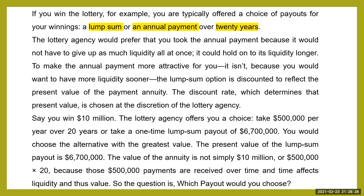Say you win 10 million dollars. The lottery agency offers you a choice: take 500,000 per year over 20 years, or take a one-time lump sum payout of 6.7 million dollars. You would choose the alternative with the greatest value. The present value of the lump sum payout is 6.7 million. The value of the annuity is not simply 10 million, or 500,000 times 20, because those 500,000 payments are received over time.